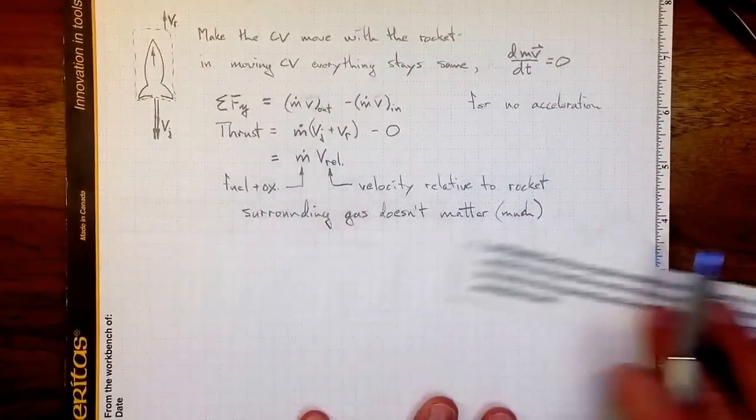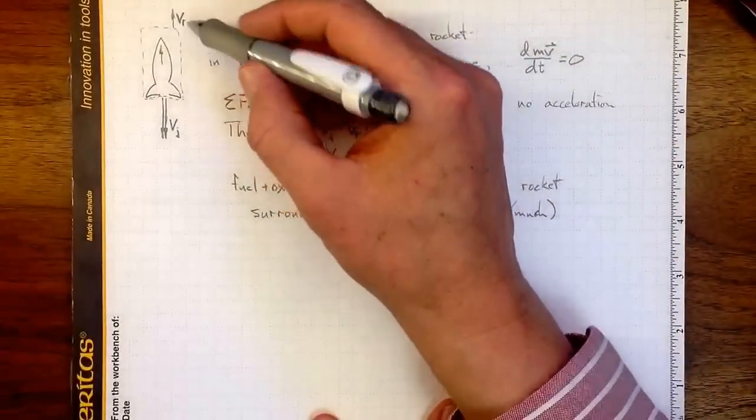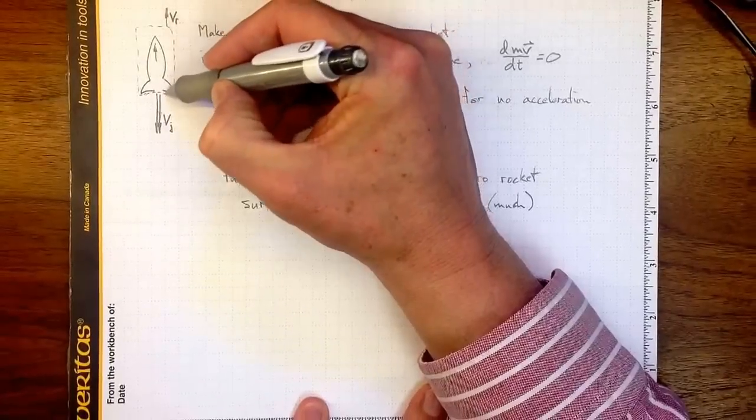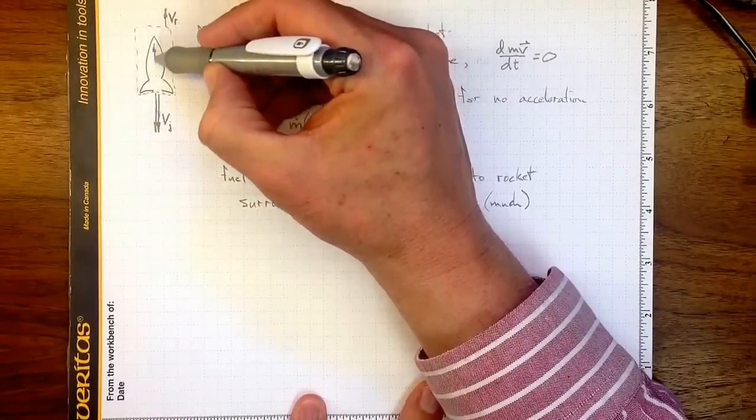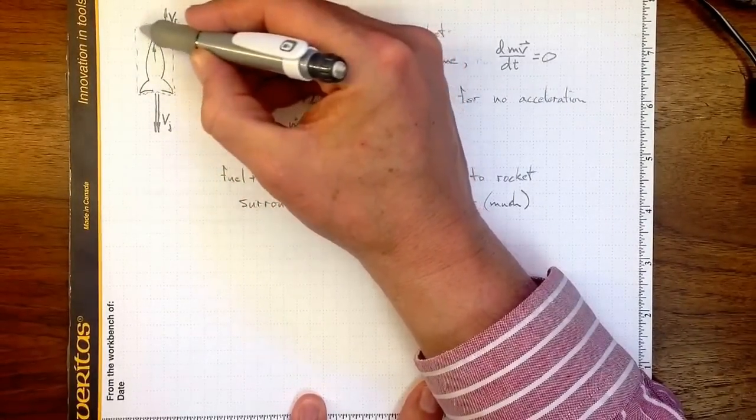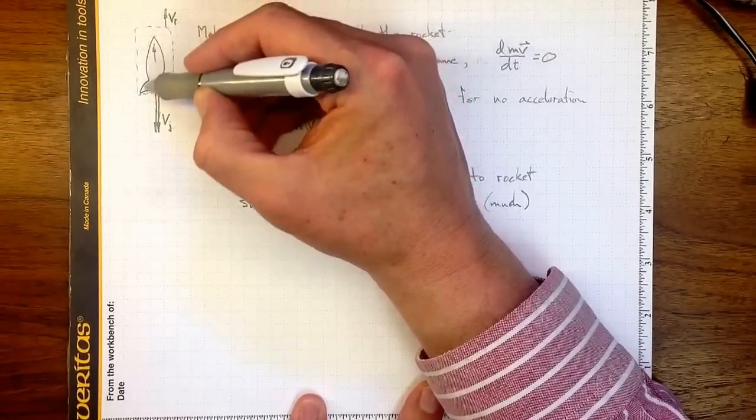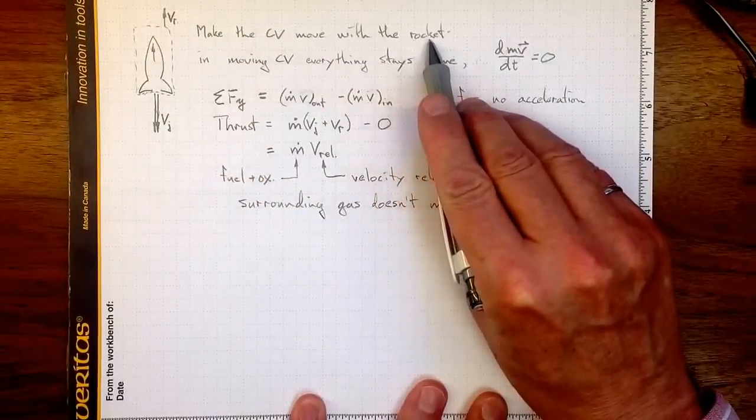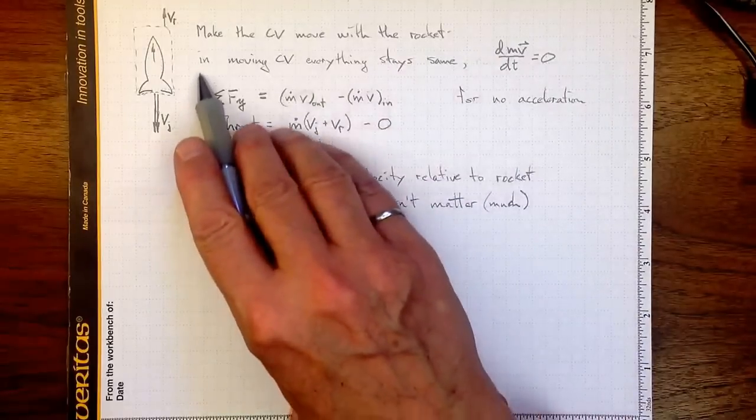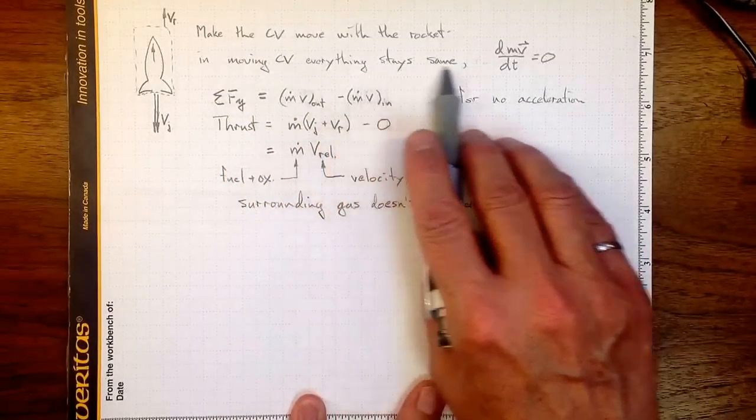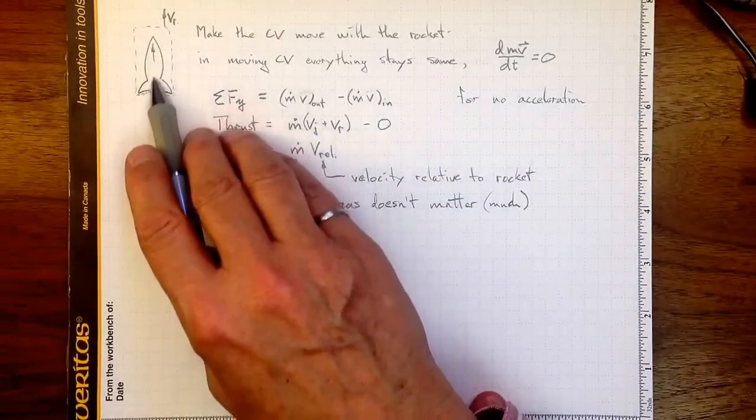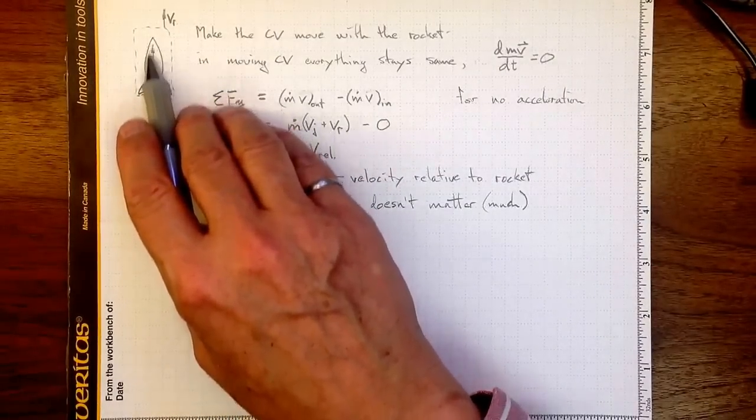Now, if we have a rocket moving at some velocity v_rocket, we can put a control volume around the rocket that moves at the same velocity as the rocket, and thus it looks like the rocket's stationary inside the control volume. So if we make the control volume move with the rocket, then inside the moving CV, everything stays the same. There's no change in momentum because nothing's moving at any different velocity than it was before.